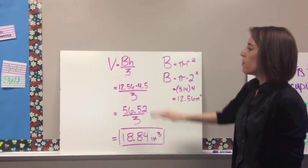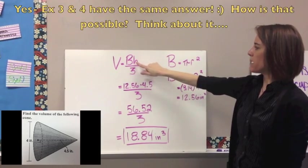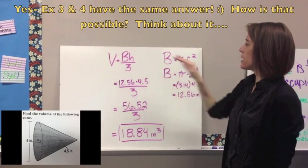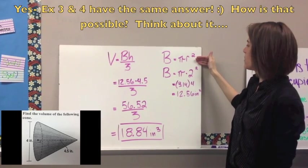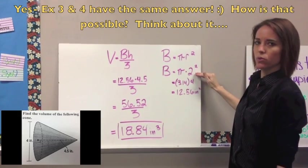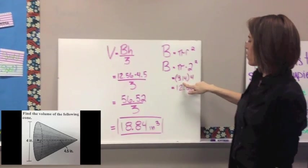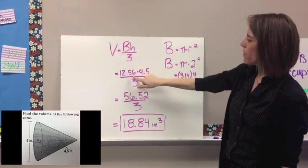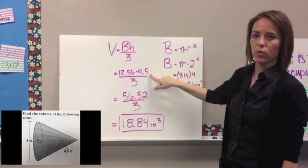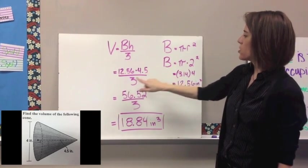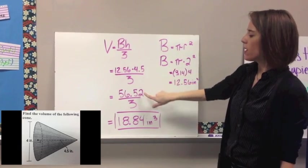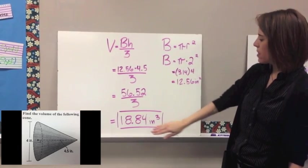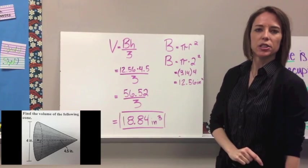Here's the solution for example 4. Start with the formula: V = (1/3) × area of the base × height. Since it's a cone, the base is a circle, so use B = π r². The radius is 2, so 2 squared is 4, and 3.14 times 4 gives us 12.56 inches squared. Plug that in for area of the base, and the height of the cone is 4.5 inches. So 12.56 times 4.5 equals 56.52, then divide by 3, which gives you 18.84 inches cubed.